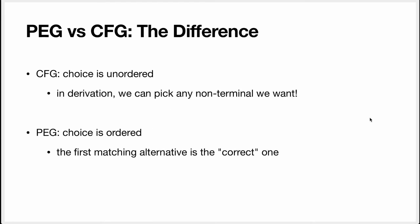So the big difference: in CFG, choice is unordered. In derivations we can pick any non-terminal we want — order does not matter. In PEG, on the other hand, choice is ordered. When we are matching — and remember, in PEG it's recognition-based, so this always involves an input we are testing — the first matching choice alternative is always the correct one. Once we've seen that one alternative matches, we validate that choice and we will never come back to change it. This has consequences for the parsing algorithms.